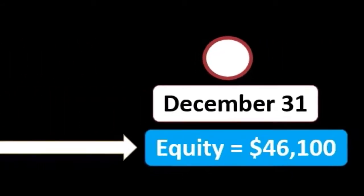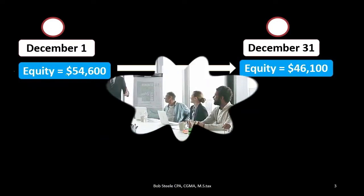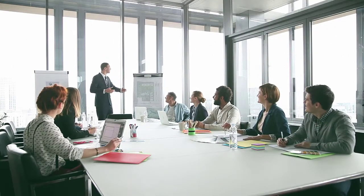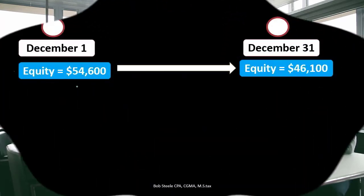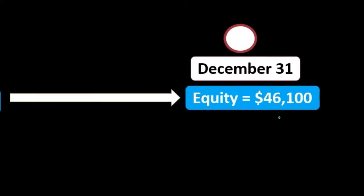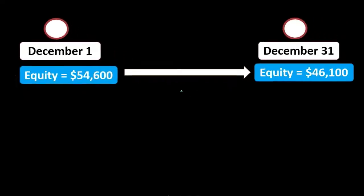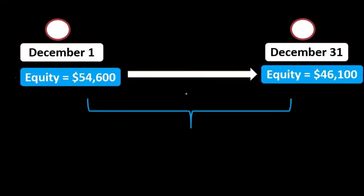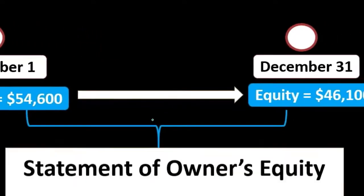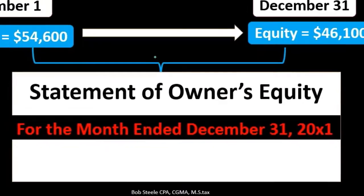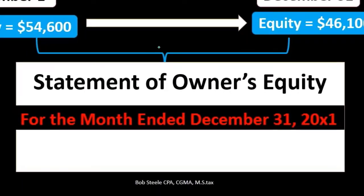We have two distinct points in time: one showing the book value of the company — assets minus liabilities — at the beginning of the time period, and one at the end of the time period. We reconcile the difference between those two by showing the activity during the time period, and that is done with the statement of owner's equity.